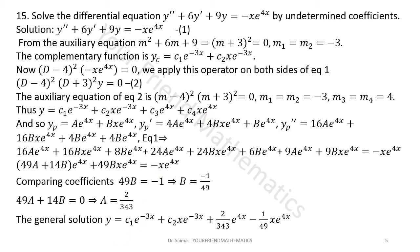Since the c₁e^(−3x) + c₂xe^(−3x) part is already in the complementary function, we exclude it and suppose the particular solution as yp = Ae^(4x) + Bxe^(4x). Substituting into equation 1 requires derivatives. The first derivative is y'p = 4Ae^(4x) + 4Bxe^(4x) + Be^(4x), applying the product rule for the Bxe^(4x) term. The second derivative gives y''p = 16Ae^(4x) + 16Bxe^(4x) + 4Be^(4x) + 4Be^(4x) = 16Ae^(4x) + 16Bxe^(4x) + 8Be^(4x).